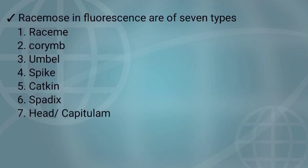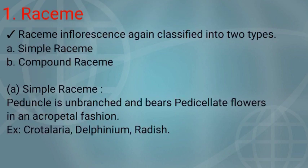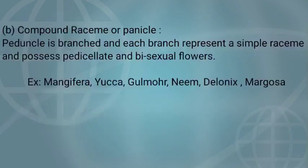Racemose inflorescences are of seven types: 1. Raceme, 2. Corymb, 3. Umbel, 4. Spike, 5. Catkin, 6. Spadix, 7. Head inflorescence or Capitulum. Raceme inflorescence is again classified into two types: simple raceme and compound raceme. In simple raceme, the peduncle is unbranched and it bears pedicellate flowers in an acropetal manner. Examples: Crotalaria, Delphinium, and Radish.